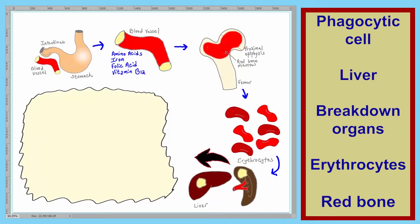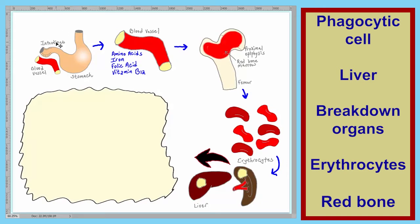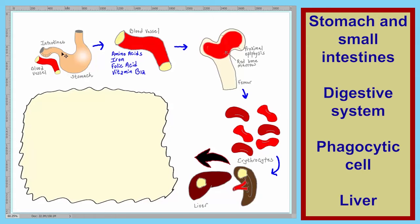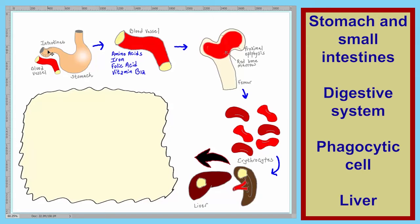Here we have the components. I've annotated most of these already. Here we have a representation of our digestive system — the stomach and the intestines. We have the blood vessel into which those elements enter circulation, and we've blown that up here.